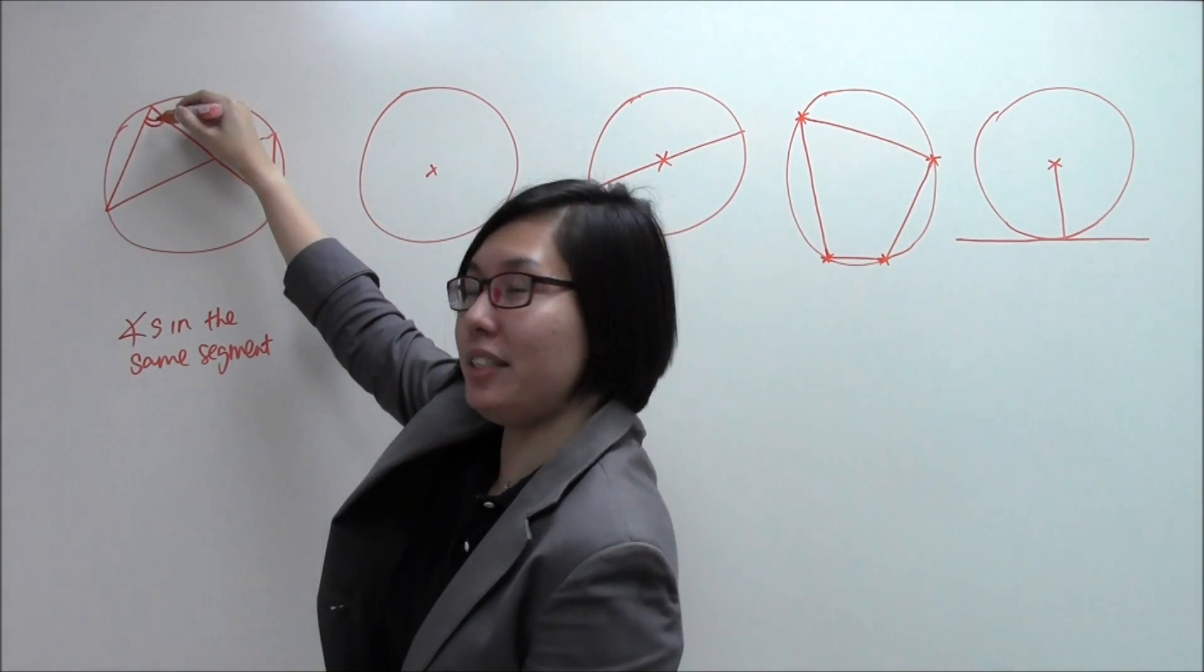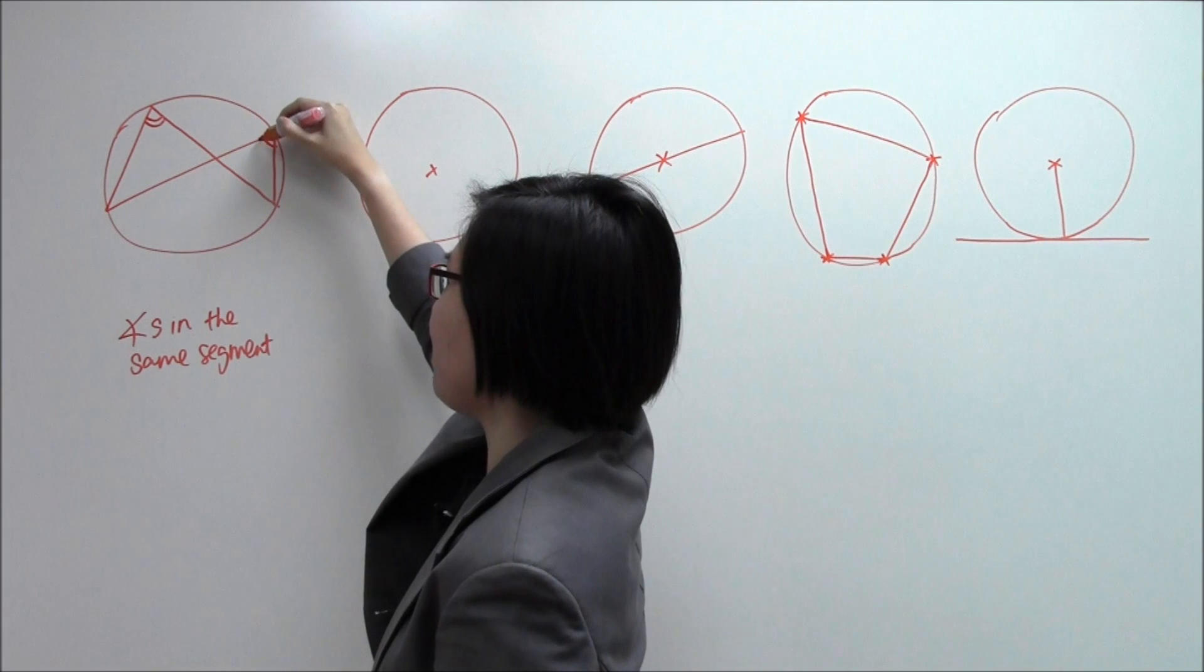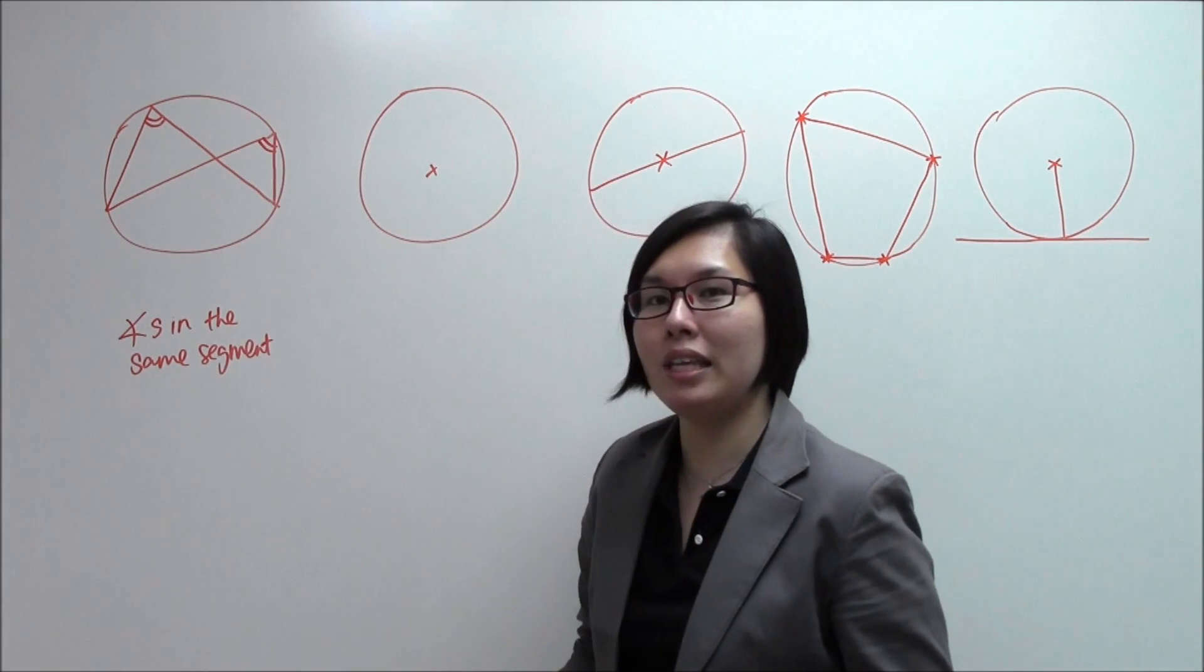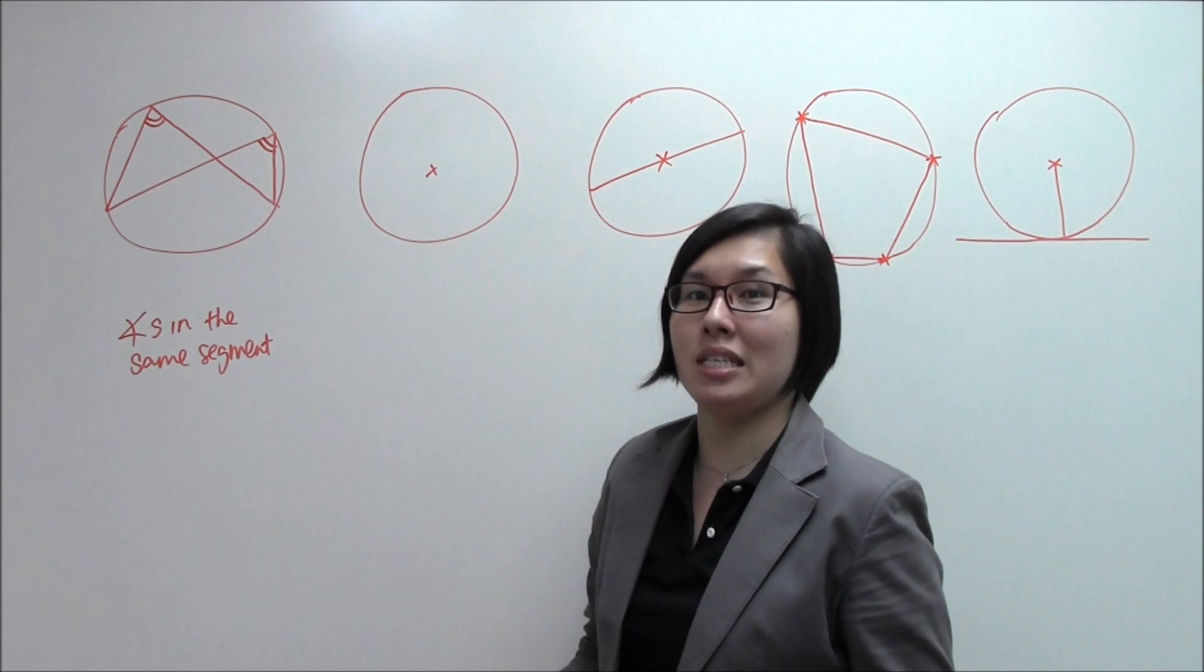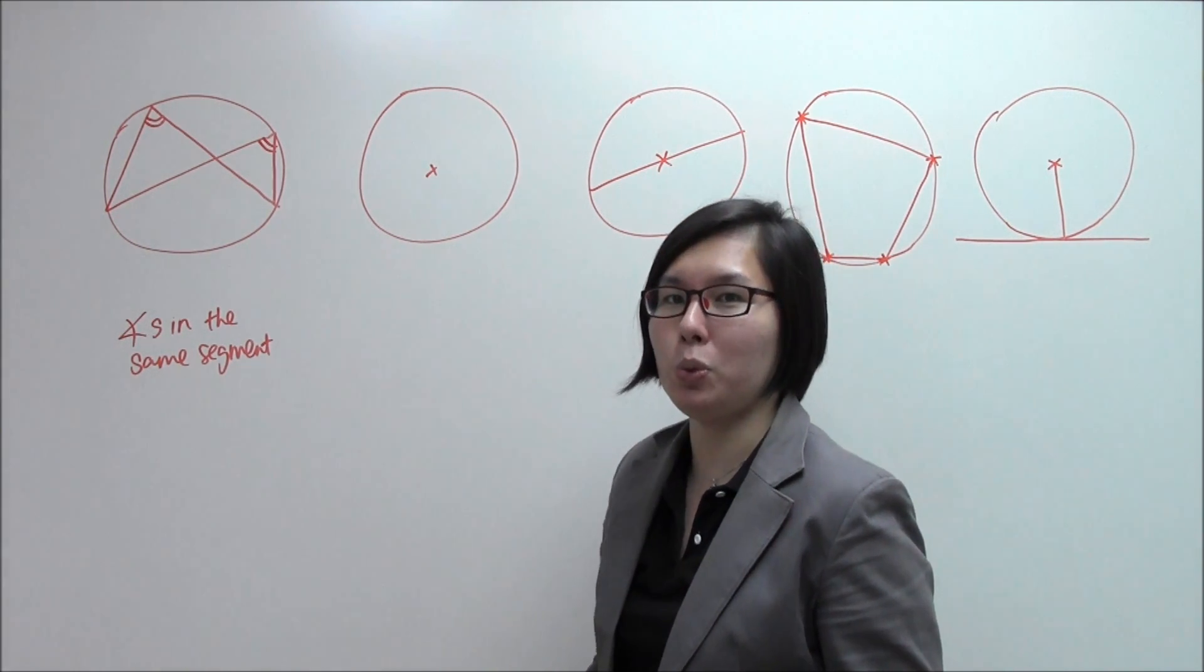This angle that I've indicated here is exactly the same as this other angle. Therefore, the name of this property, angles in the same segment. They are equal to one another.